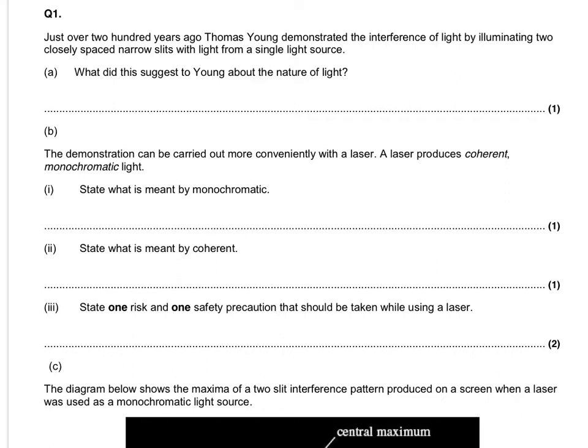Thomas Young, 200 years ago, demonstrated interference of light by using a double slit illuminated from a single source and producing an interference pattern. In terms of what this suggested, it basically told Thomas Young that light was a wave. Interference is specifically a wave property, so particles can't interfere with each other. So it essentially indicated that light was a wave.